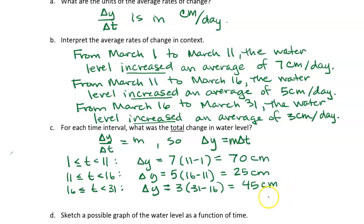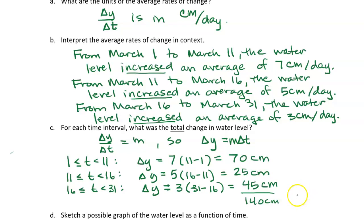That tells us over each time interval how much the water went up. Over the whole month, if you add all these up — 70 plus 25 plus 45 — you get 140 centimeters. That's the total change over the whole month.